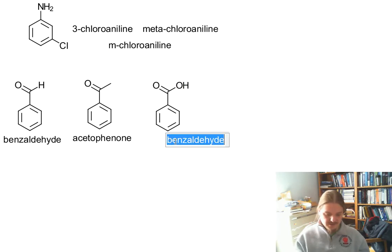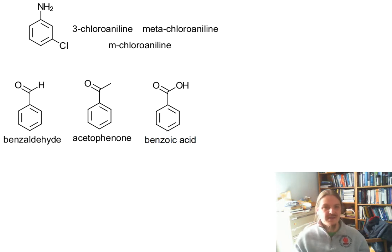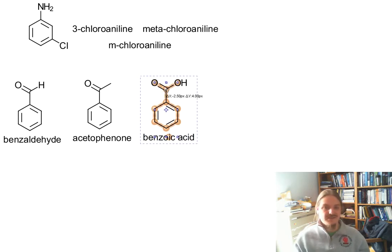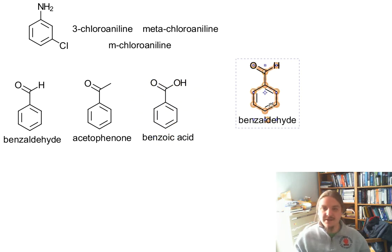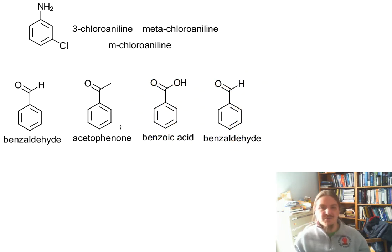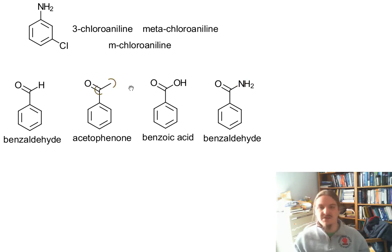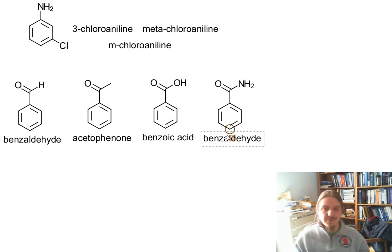The carboxylic acid is called benzoic acid. In fact, benzoic acid is actually the progenitor of all of these names because it was the first compound to be isolated. It was named after the gum benzoin, the plant resin where it was found. The amide is called benzamide.